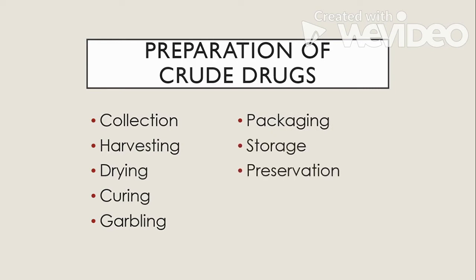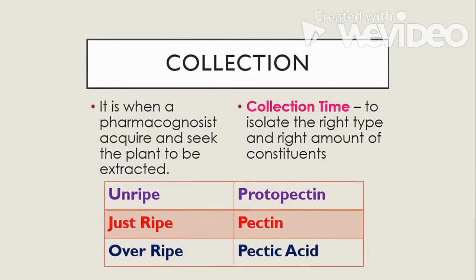Let's start with the first step: collection. It is when a pharmacognosist acquires and seeks the plant to be extracted. In this step, we have the so-called collection time — to isolate the right type and right amount of constituent and to obtain a drug of good quality. For example, a plant may contain a substance in winter that is not present in summer, or vice versa.